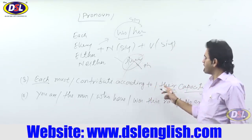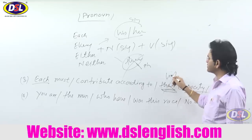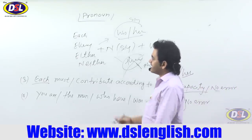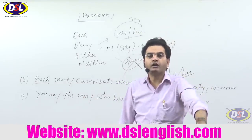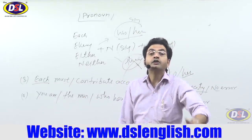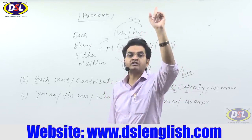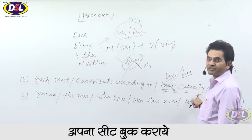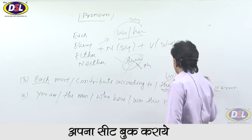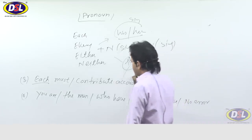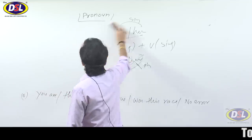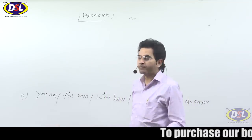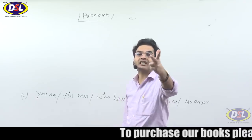So: 'Each must contribute according to their capacity' is wrong. It should be 'according to his capacity' or 'according to her capacity.' With each, every, either, neither — the pronoun becomes singular (his/her). My goal is not to write a whole chapter but to show you the way to answer questions on this topic.